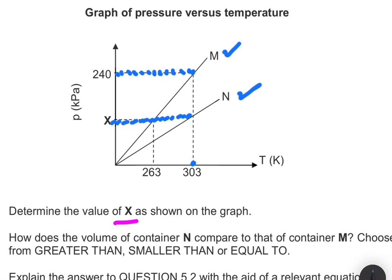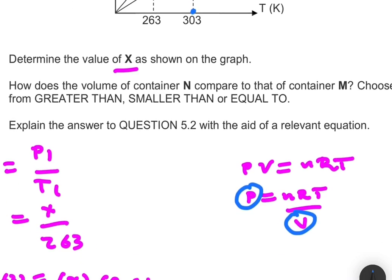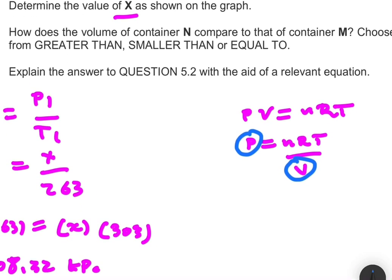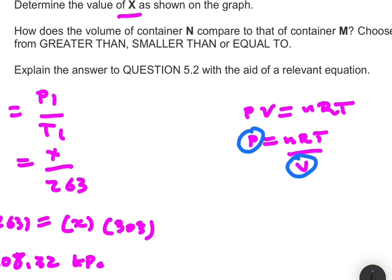So how will the volume of container N compare to that of container M? The volume of container N will be greater than that of container M.